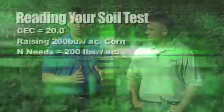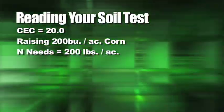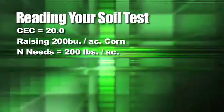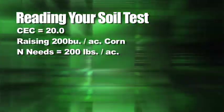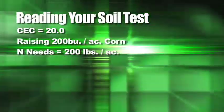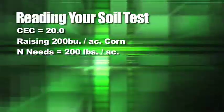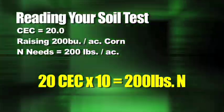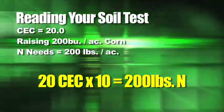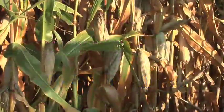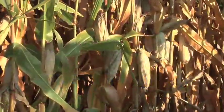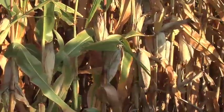Here's one example of why cation exchange capacity matters. Let's say you have a CEC of 20 and you're raising 200-bushel corn, needing roughly 200 pounds of nitrogen. Your soil at a CEC of 20 can hold about 10 times your CEC in pounds of nitrogen at one time — so 20 times 10 is 200 pounds of nitrogen your soil can hold. That means if you're shooting for 200-bushel corn, you can put on all 200 pounds of nitrogen and your soil will hold it — it won't leach away.